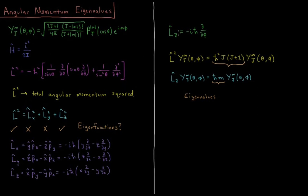So we have our eigenfunctions of the Hamiltonian are also eigenfunctions of L-squared and Lz, total angular momentum squared, and the z-component of angular momentum.